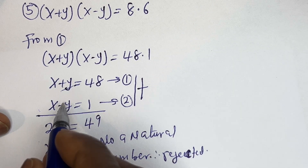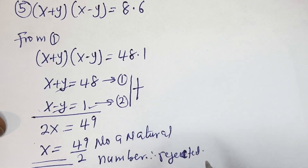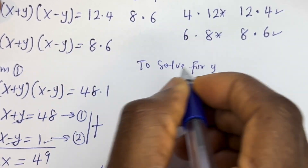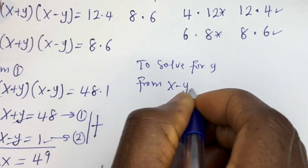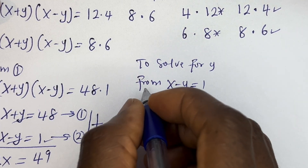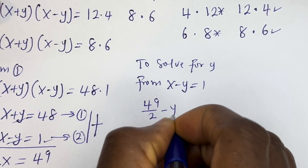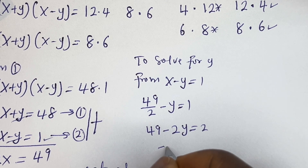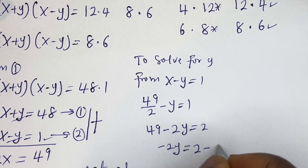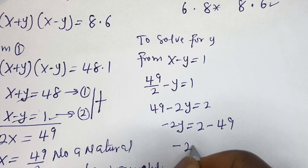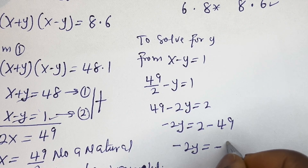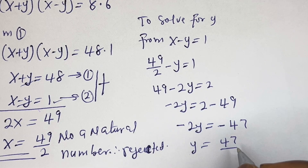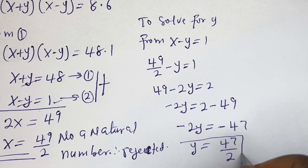Let's also verify Y. From S − Y = 1, substituting S = 49/2: 49/2 − Y = 1. Multiplying through by 2: 49 − 2Y = 2. Then −2Y = 2 − 49 = −47, so Y = 47/2. This is also not a natural number. It is rejected.